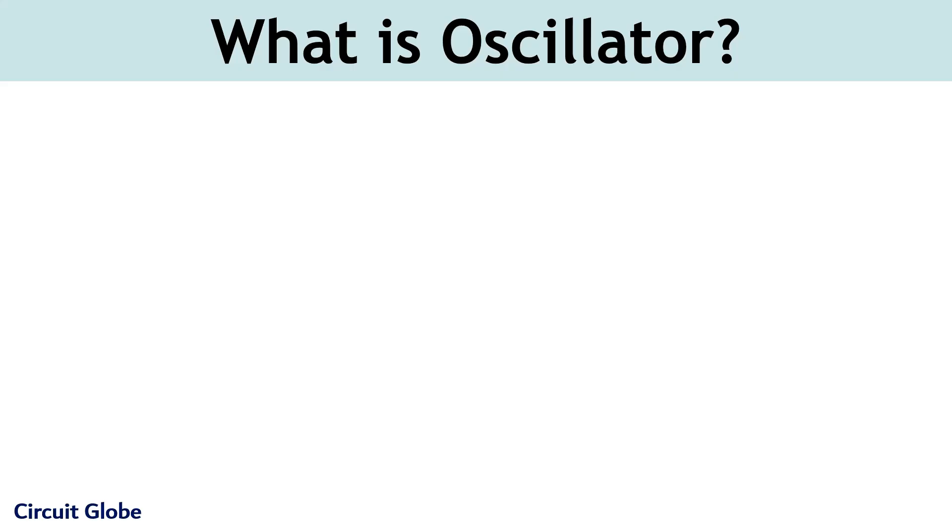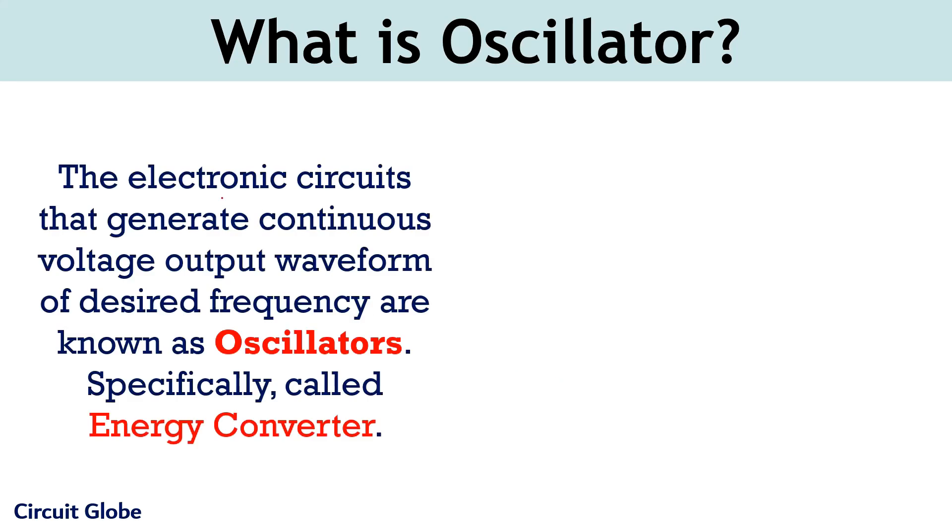Let's first understand the basic definition of oscillators. So oscillators are defined as the electronic circuits that produce continuous waveform at the output of desired frequency. In simplest terms, oscillators are something that create oscillations, that is, back and forth movement.